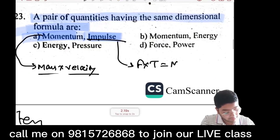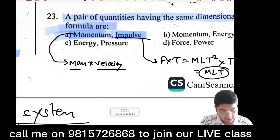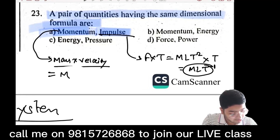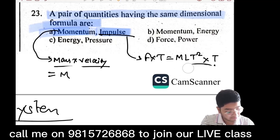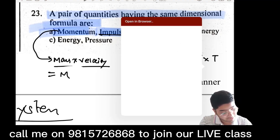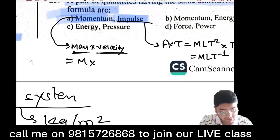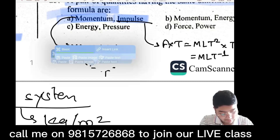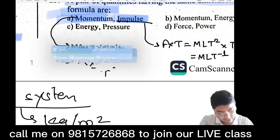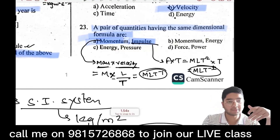Force is M·L·T⁻², multiplied by time T gives M·L·T⁻¹. Mass times velocity: mass is M, velocity is L·T⁻¹ (meter per second), so momentum is M·L·T⁻¹. Both momentum and impulse have the same dimensional formula M·L·T⁻¹.